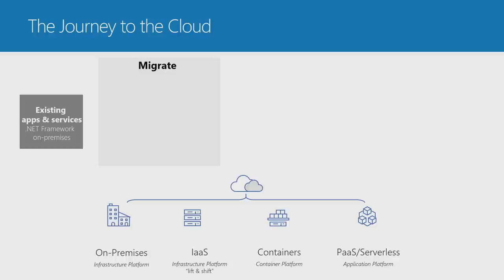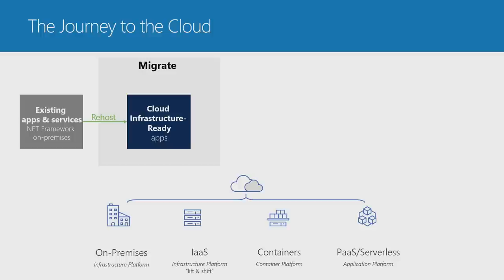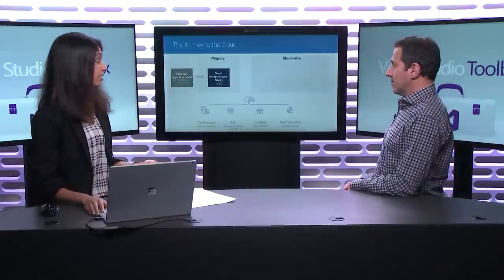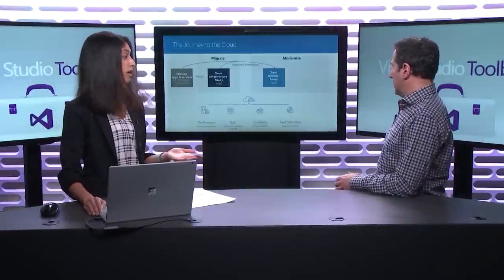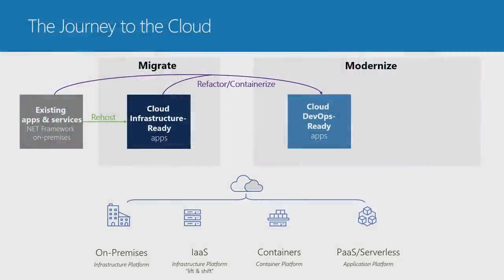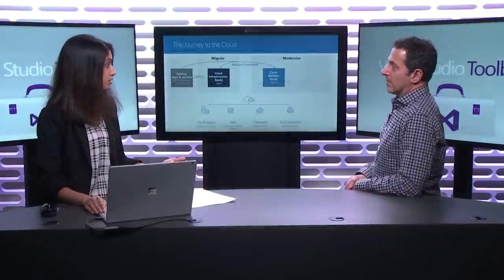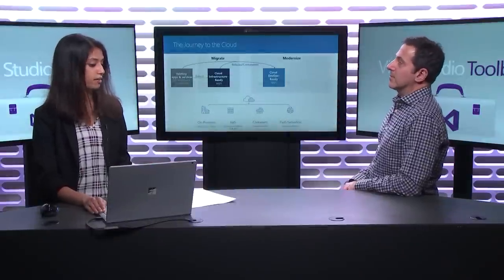Because it turns out the answer is a lot. So let's take a look at what the term modernization actually means and where containers fit into that. We're really talking about existing apps and services — applications built with .NET Framework, usually on-prem — and we want to move those to the cloud without necessarily having to rewrite as a .NET Core app. The first option would be to migrate it, making it cloud infrastructure ready, which is really just re-hosting in VMs. No code changes, but you use VMs — the more traditional route.